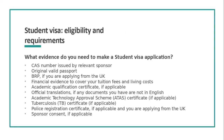The documents you need for a student visa application are broadly similar to a Tier 4 application. You need a Confirmation of Acceptance for Studies or CAS issued by your sponsor, a valid passport, a BRP if applying from within the UK, financial evidence covering tuition fees and living costs, and in some cases evidence of the qualification you used to gain your offer. You may also need official translations of any documents not in English, and depending on your subject and nationality, you may need an Academic Technology Approval Scheme, or ATAS, certificate.